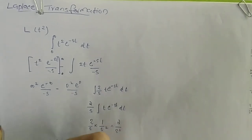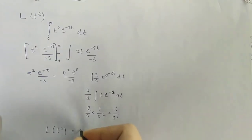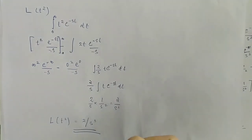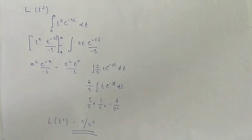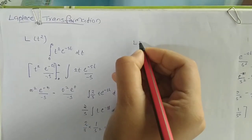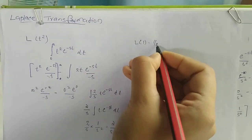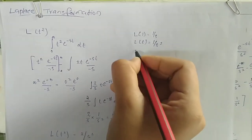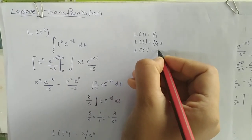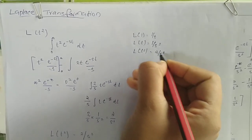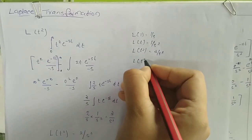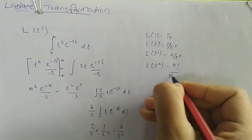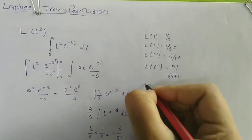That gives us L{t²} equal to 2 by s cubed. We can also note that L{t} equals 1 by s squared, so the pattern for L{t^n} gives n factorial over s to the power n plus 1.